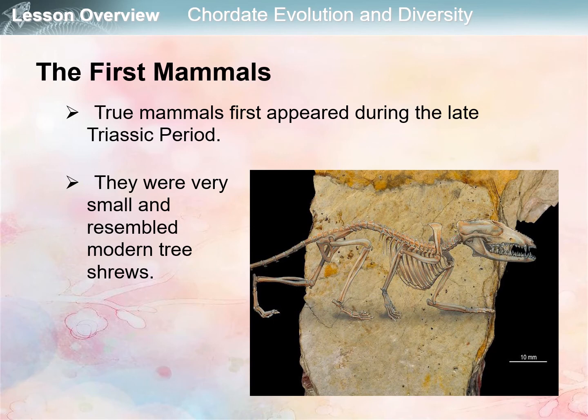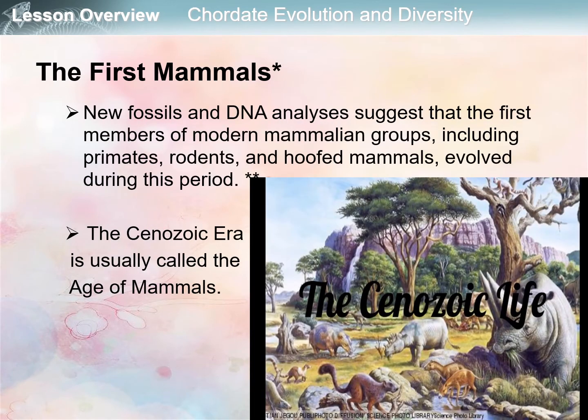The true mammals first appeared during the late Triassic period. They were very small and resembled shrews. One of the oldest mammals shown in the figure is only about 10 millimeters in length. While dinosaurs ruled, mammals remained generally small and were probably active mostly at night. New fossils and DNA analysis suggest that the first members of modern mammalian groups — including primates, rodents, and hoofed mammals — evolved during this period.